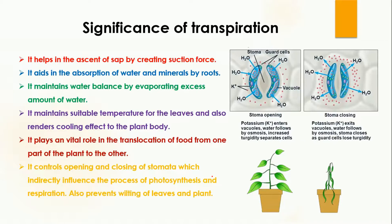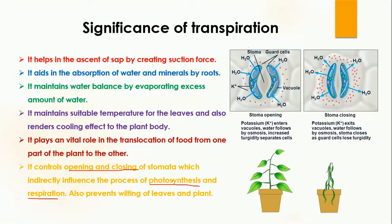Another important significance of transpiration is that it controls the opening and closing of stomata. This is very important to maintain balance in plant cells because stomata are involved in both photosynthesis and respiration. By controlling the opening and closing of stomata, transpiration is indirectly controlling the processes of photosynthesis and respiration.